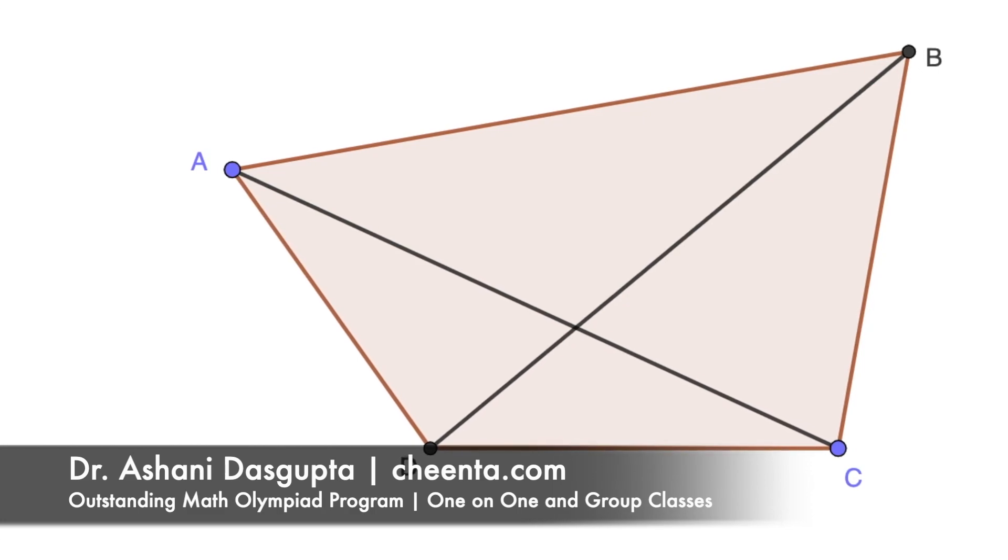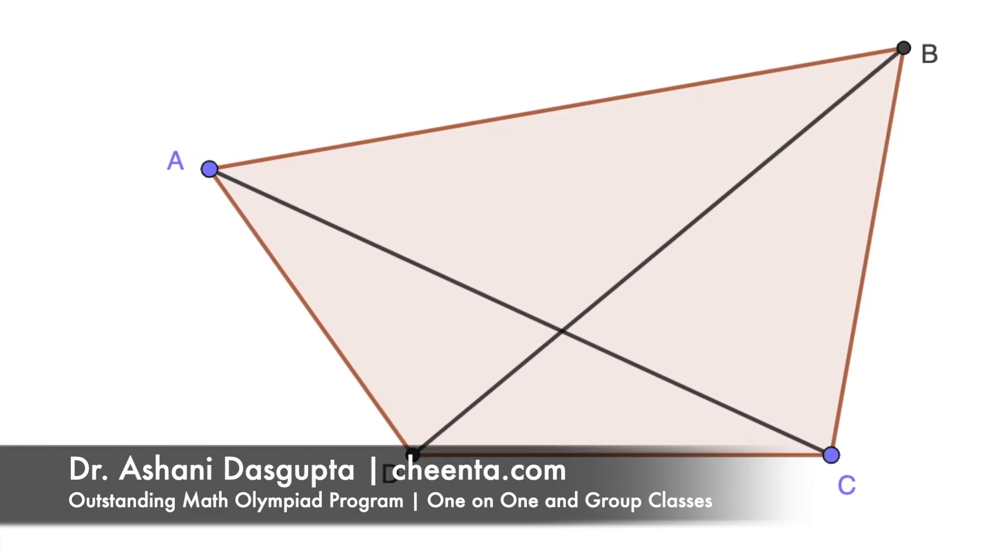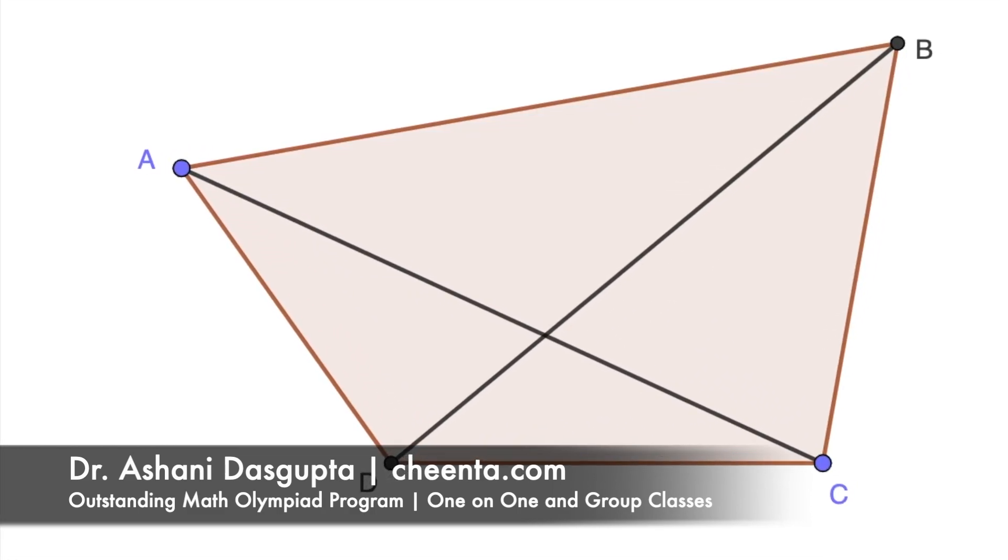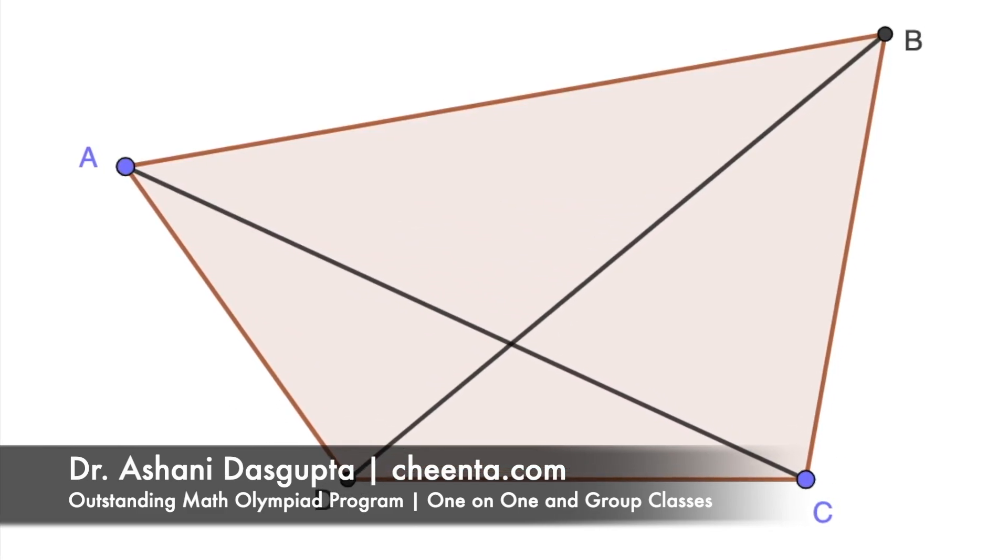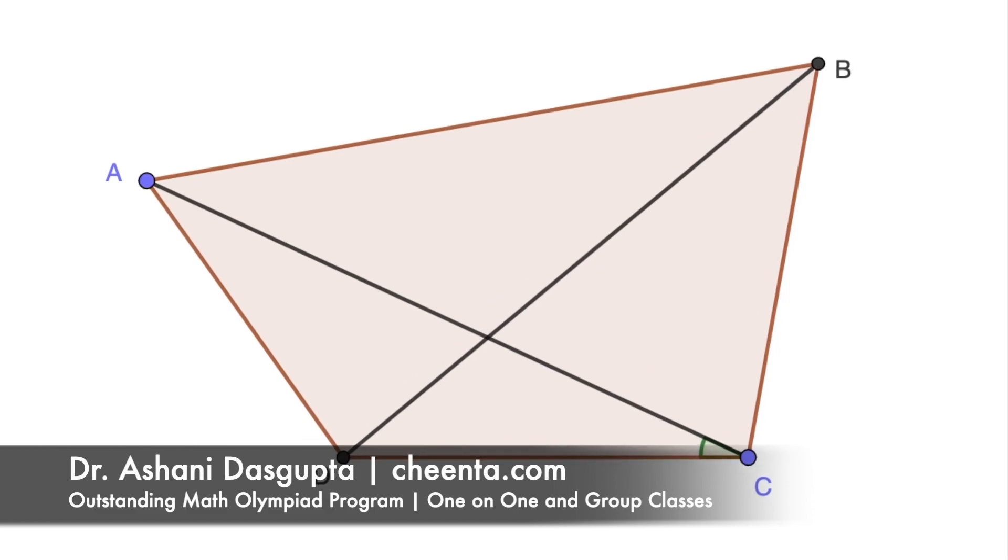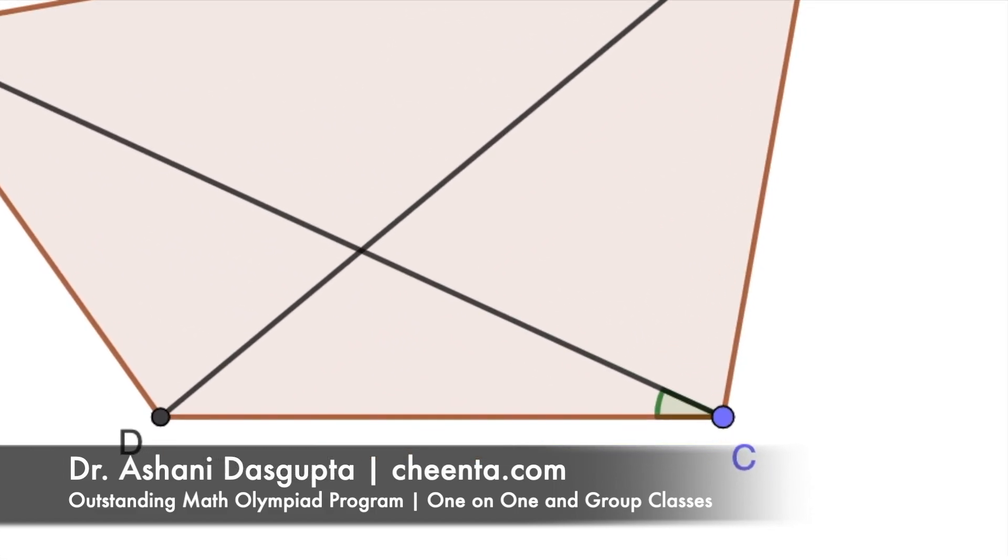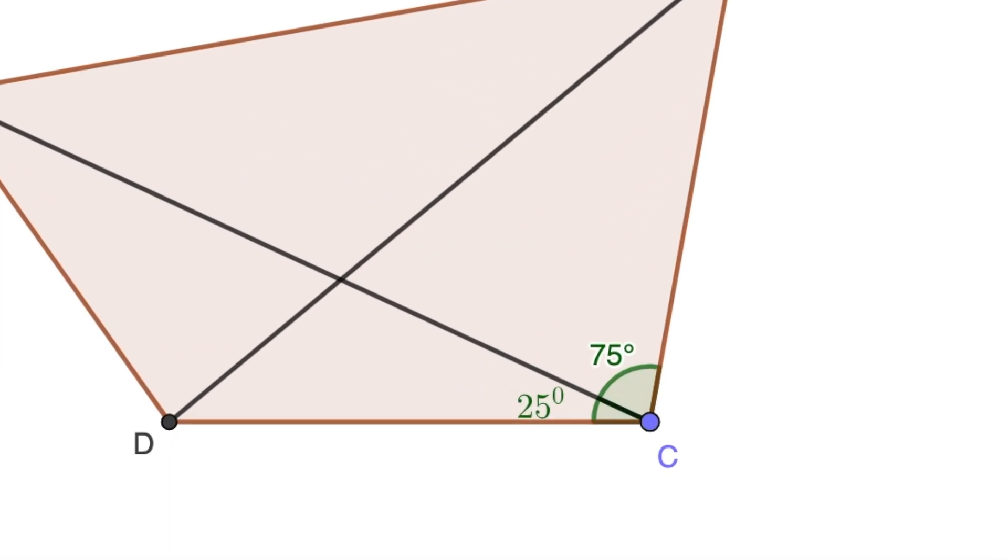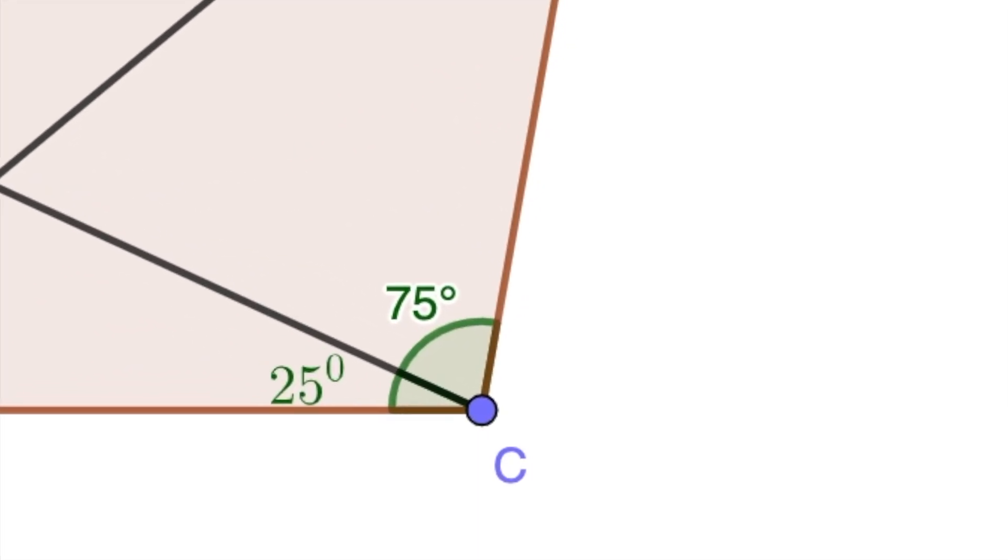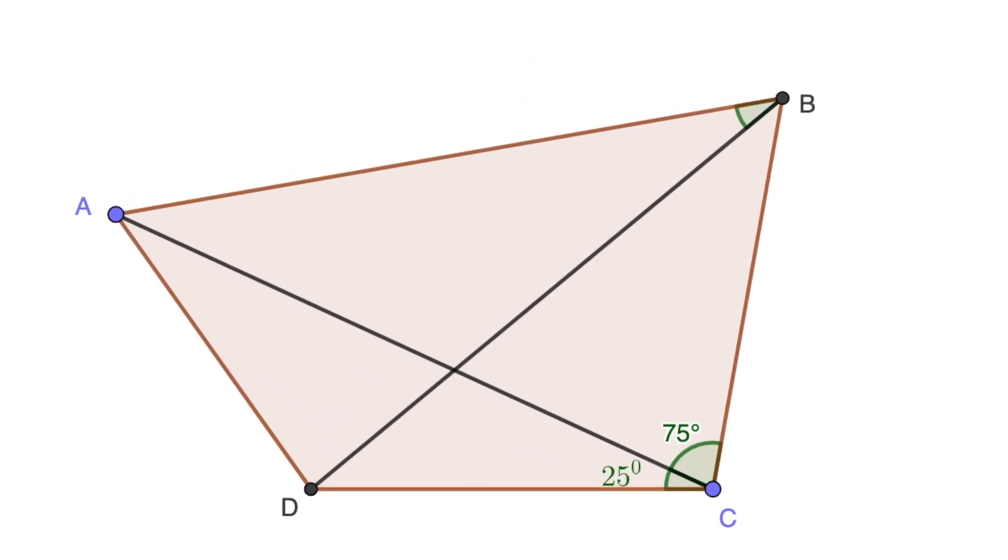Let's try this beautiful problem from INMO 2021. We start with a quadrilateral ABCD such that angle ACD is given to be 25 degrees, angle BCA is given to be 75 degrees, and angle ABD is given to be 30 degrees.